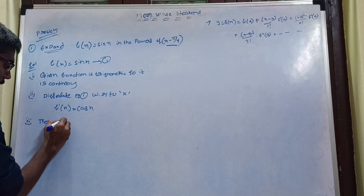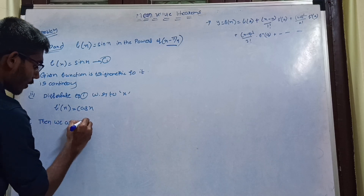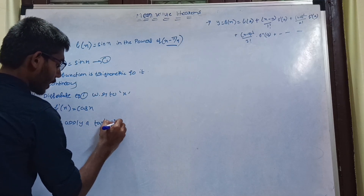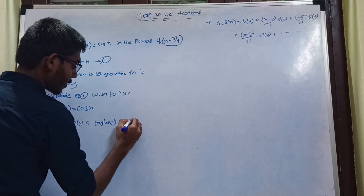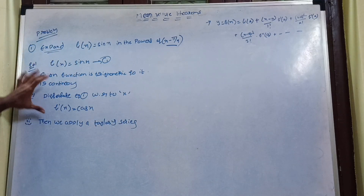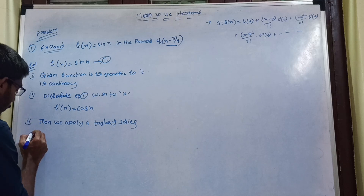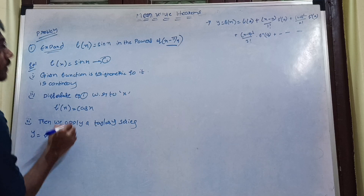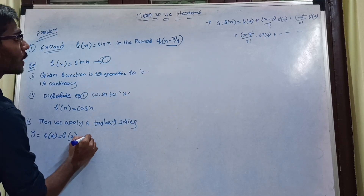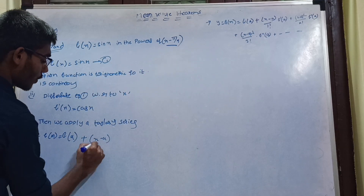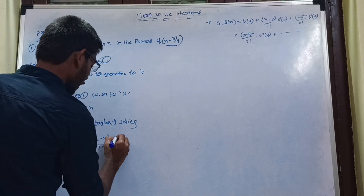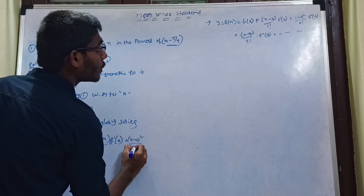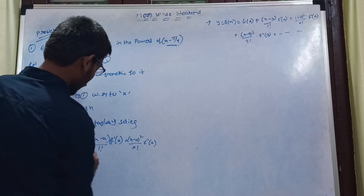Then we apply Taylor's series. We apply the formula. The Taylor series formula is: f(x) = f(a) plus (x minus a) by 1 factorial times f'(a), plus (x minus a) whole square by 2 factorial times f''(a), and so on. We apply minimum three terms.